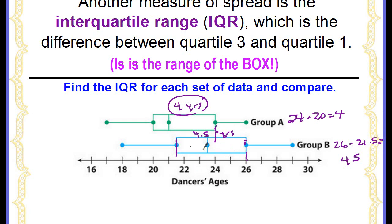So there's a little bit more variability in group B with the ages than in group A for the center of our data.